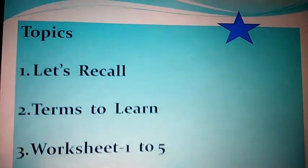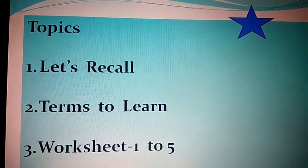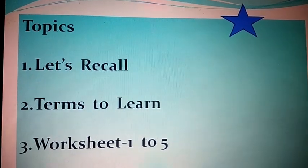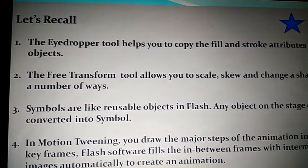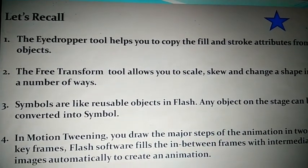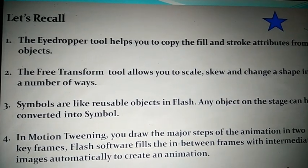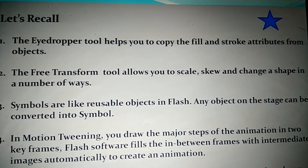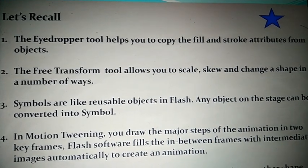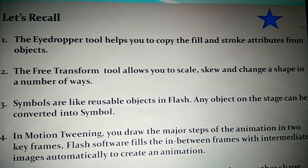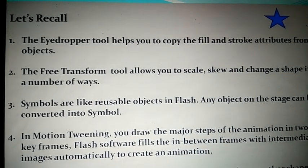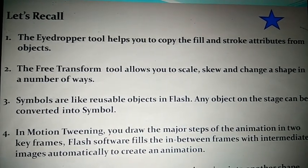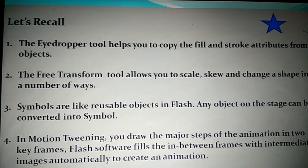Today we are going to discuss: let's recall points, terms to learn, and worksheet one to five. First recall point: the eyedropper tool helps you to copy the fill and stroke attributes from objects. Second: the free transform tool allows you to scale, skew, and change a shape in a number of ways. Third: symbols are reusable objects in flash; any object on the stage can be converted into a symbol.